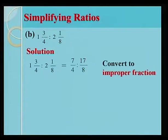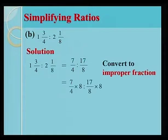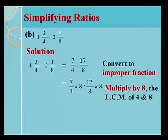We first convert to improper fraction. 1, 3 over 4 equals 7 over 4. And 2, 1 over 8 equals 17 over 8. We now multiply the 2 improper fractions by 8. Where 8 is the LCM of 4 and 8. We obtain 14 is to 17.